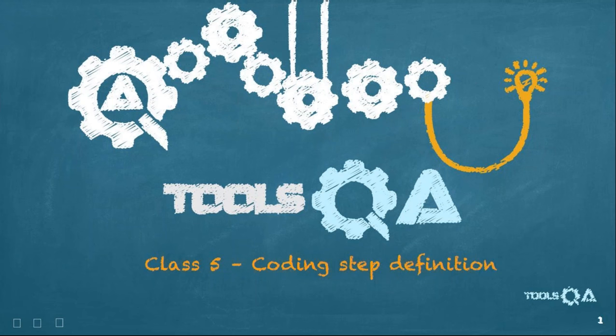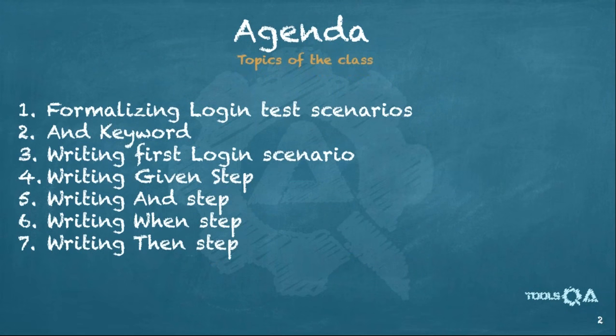Let me quickly take you through the agenda for this class. First, we will formalize a couple of login tests — we will find tests to use throughout our classes to understand Cucumber concepts. We will create three scenarios initially and add more later. Then we will talk about the AND keyword, a new keyword in addition to Given, When, and Then. After that, we will program our first login scenario from start to end, encountering the Given, AND, When, and Then steps.